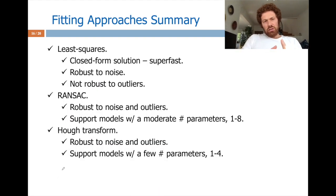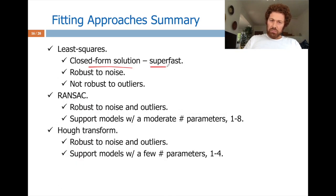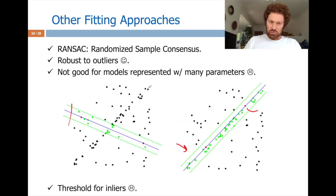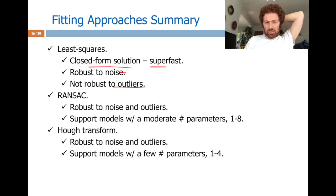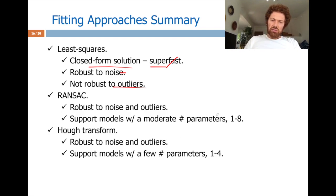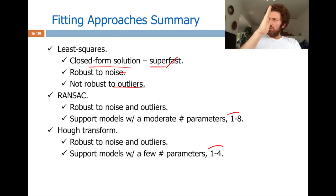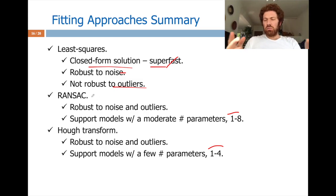Comparing the three methods: least squares provides a closed-form solution that is very fast and robust to geometric noise, but not robust to outliers. RANSAC and Hough transform are the robust versions, but not as fast. RANSAC requires a low number of model parameters — typically at most around eight. Hough transform is even more expensive because it requires discretizing the continuous parameter space.